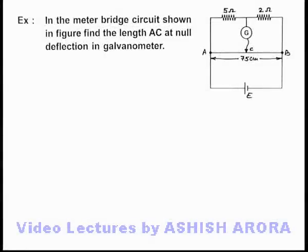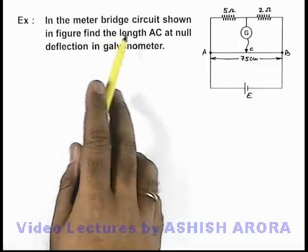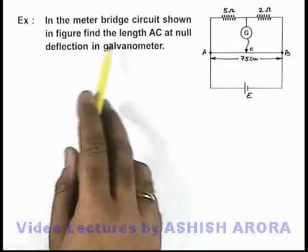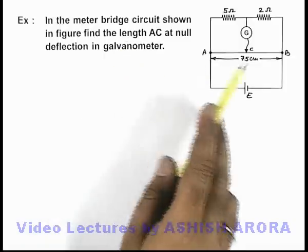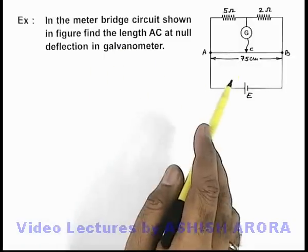In this example, we are given that in the meter bridge circuit shown in figure, we are required to find the length AC at null deflection in the galvanometer.